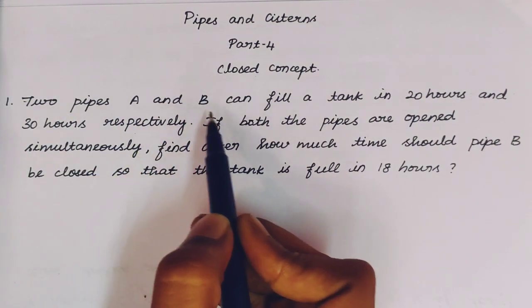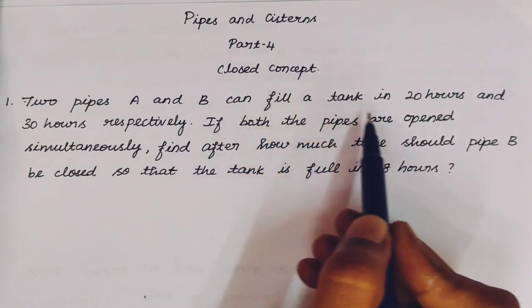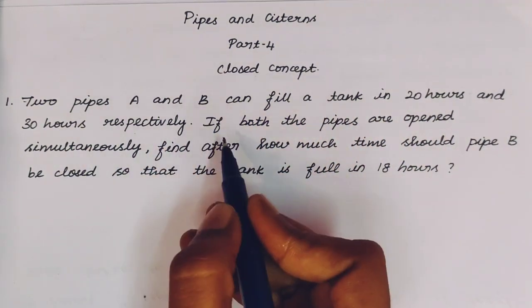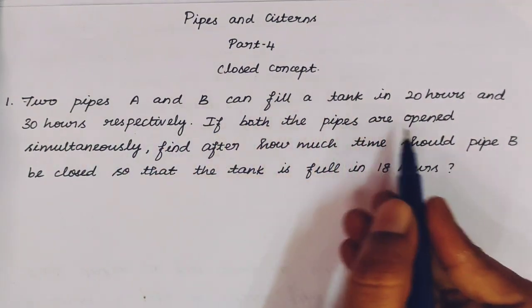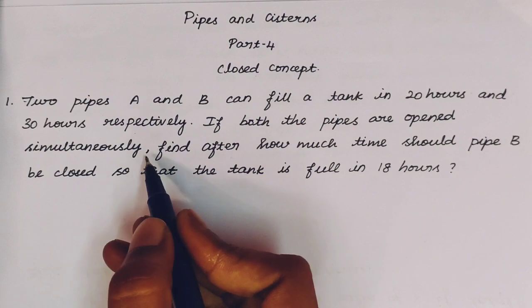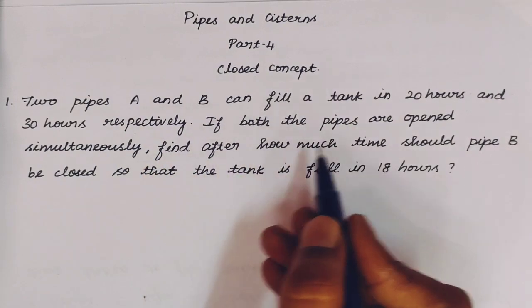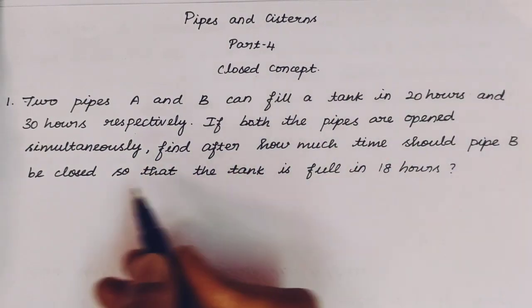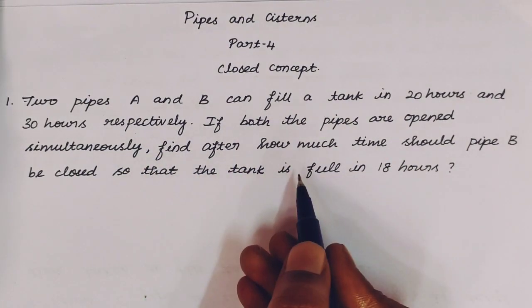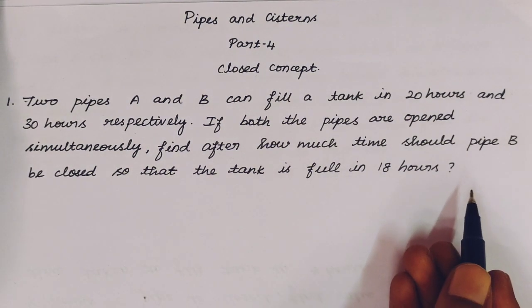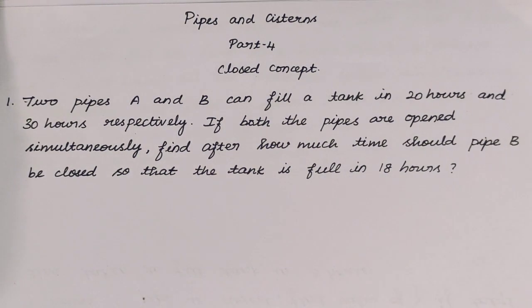Two pipes A and B can fill a tank in 20 hours and 30 hours respectively. If both the pipes are open simultaneously, find after how much time should pipe B be closed so that the tank is filled in 18 hours.